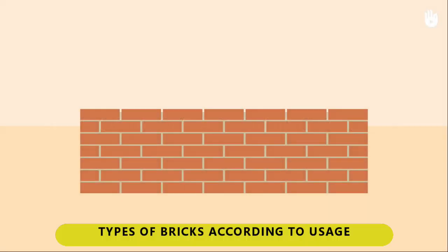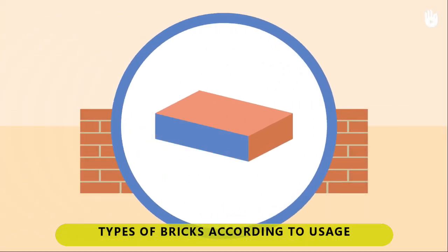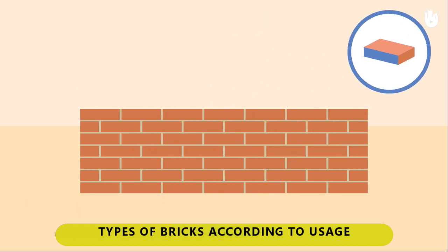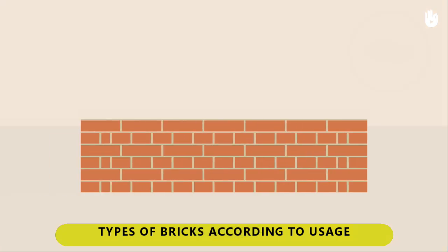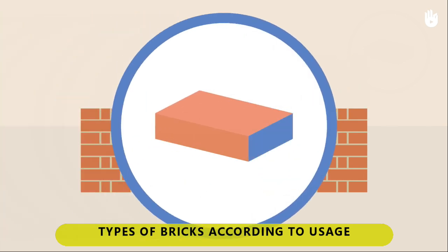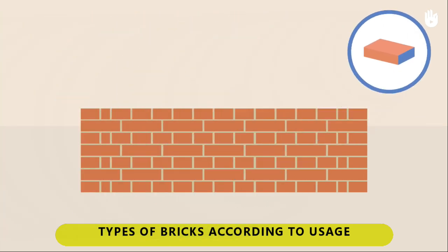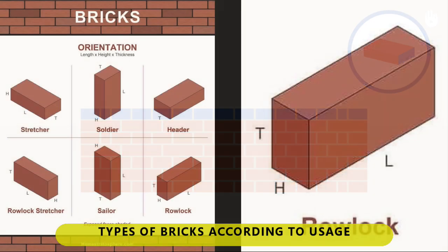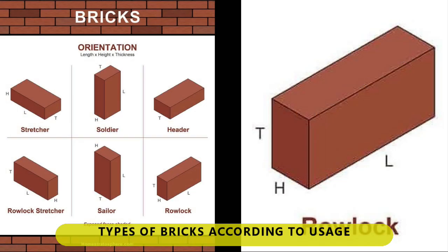Types of bricks according to usage. 1. Stretcher — laid horizontally on the side; the edge is visible to the surface of the wall. 2. Header — laid horizontally on the side; the end is visible to the surface of the wall. 3. Roelock — laid horizontally on the edge; the end is visible to the surface of the wall.